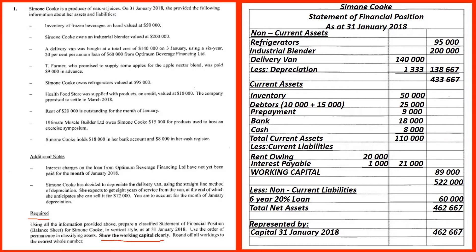The inventory of frozen beverage on hand valued at 50,000 — that is a current asset. Simone Cook owns an industrial blender valued at 200,000 — that's a non-current asset. A delivery van was bought at a total cost of 140,000 on 2nd January. There is also a loan of 60,000 from Optimum Beverage — that is a non-current asset and a long-term liability.